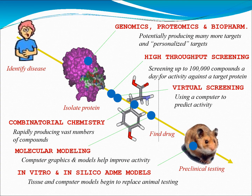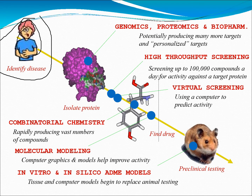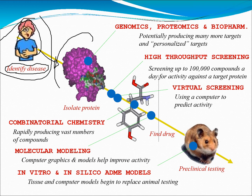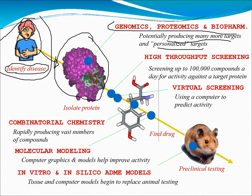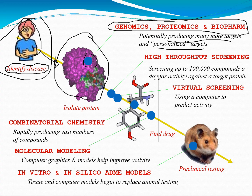Here comes the importance of the subject. Let's take a clinical example. Say this person is sick and a doctor identifies a disease. In bioinformatics, the first process would be to isolate the protein involved in causing that disease. Techniques such as genomics, proteomics, and bioinformatics potentially produce much more targets and personalized targets, so we can understand which genes are involved for the particular disease — which was not possible previously — in just a fraction of seconds.